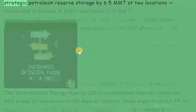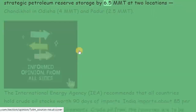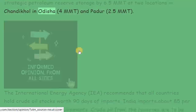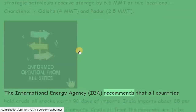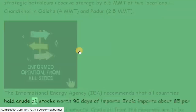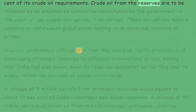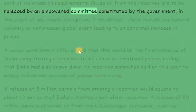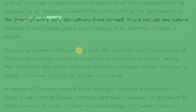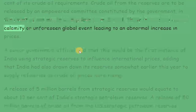India is in the process of expanding its strategic petroleum reserve storage by 6.5 MMT at two locations — Chandikhol in Odisha (4 MMT) and Padur (2.5 MMT). The International Energy Agency (IEA) recommends that all countries hold crude oil stocks worth 90 days of imports. India imports about 85% of its crude oil requirements. Crude oil from the reserves is to be released by an empowered committee constituted by the government in the event of any supply disruptions from abroad, including any natural calamity or unforeseen global event leading to an abnormal increase in prices.